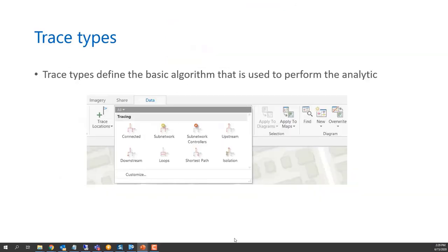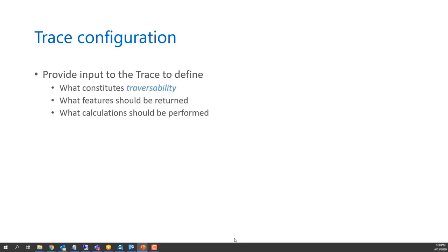Out of the box, we provide eight generic trace types — the basic algorithms that can be configured to perform the analytic you're interested in: connected, subnetwork, upstream, isolation, shortest path, and others visible in the trace pane. Trace configurations provide input to the trace operation, defining what constitutes traversability, what features will be returned, and what calculations should be performed during the trace.